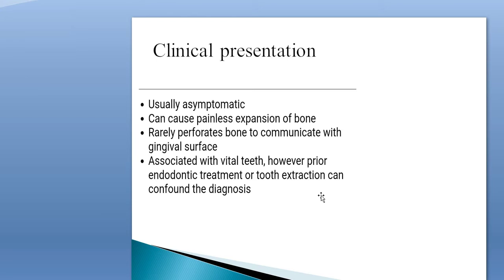The lesion is usually asymptomatic and does not show symptoms; sometimes painless expansion of bone is present. Rarely, it perforates bone to communicate with the gingival surface, and sometimes the color of the overlying epithelium is blue, whereas in general the color of the lesion is normal. It is associated with vital teeth, but sometimes confusion arises because it can also be associated with endodontically treated teeth or occur at an extracted tooth site, causing confusion with residual cyst or lateral radicular cyst.